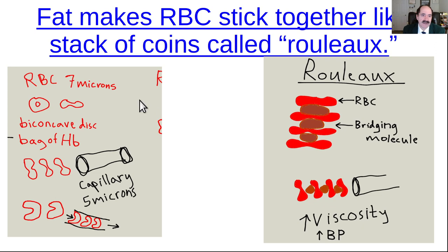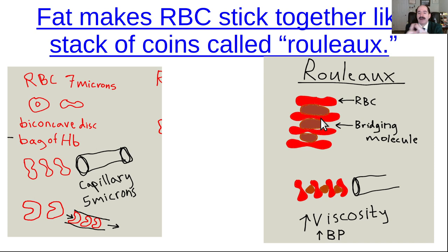Red blood cells are about seven microns; capillaries are a little smaller at about five microns in diameter, so red blood cells have to deform to pass through. A high-fat diet increases LDL cholesterol, which acts as a bridging molecule sticking red blood cells together and overcoming their zeta potential, creating blood sludge. The slowing of blood passing through capillaries decreases the rate of oxygen delivery to tissues by about 15 to 20 percent, contributing to hypoxia.